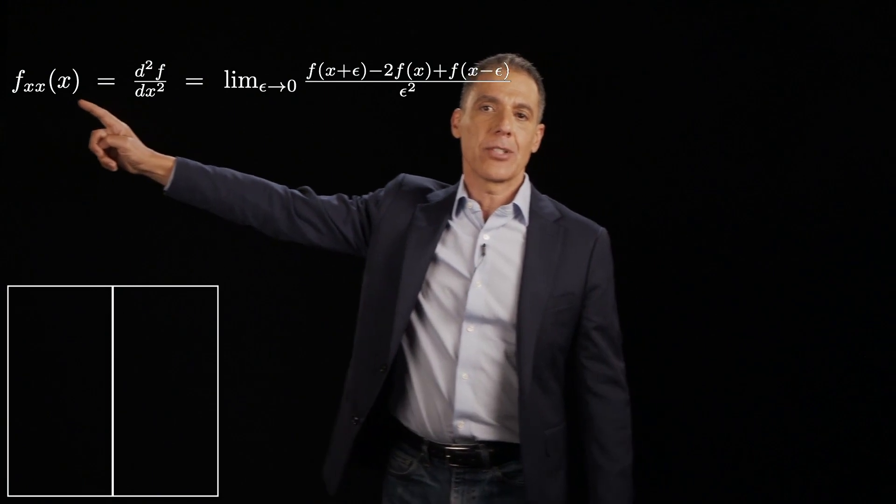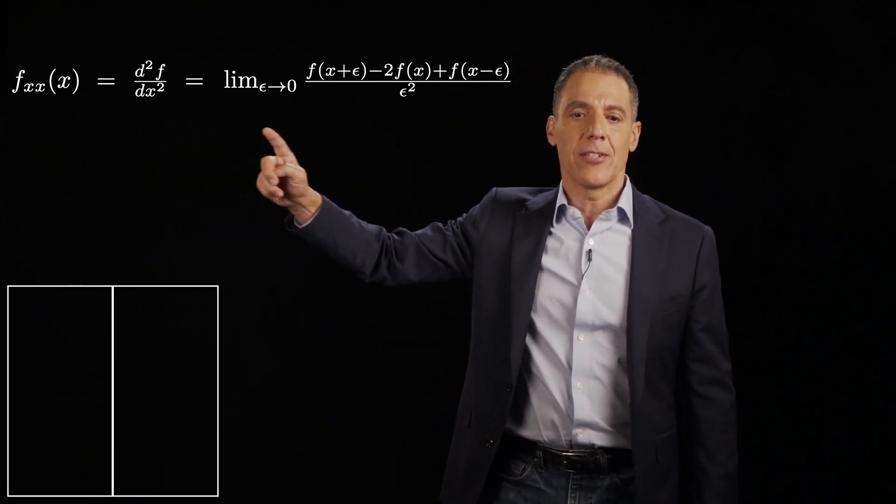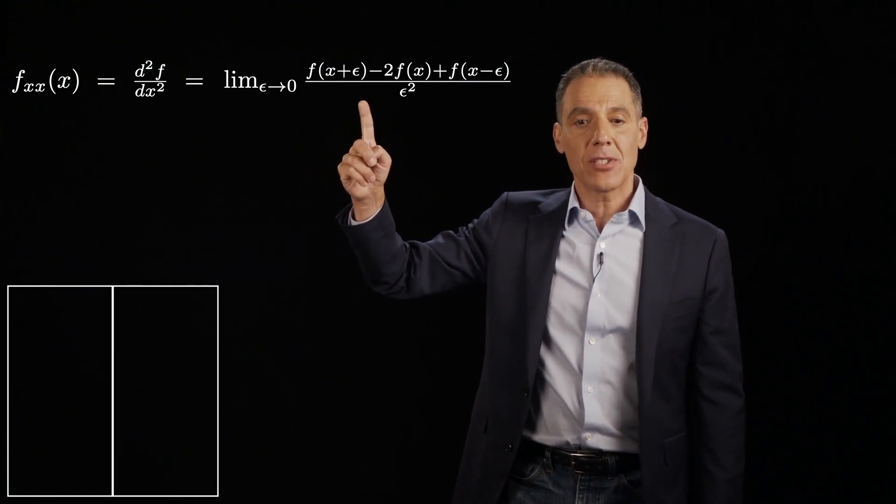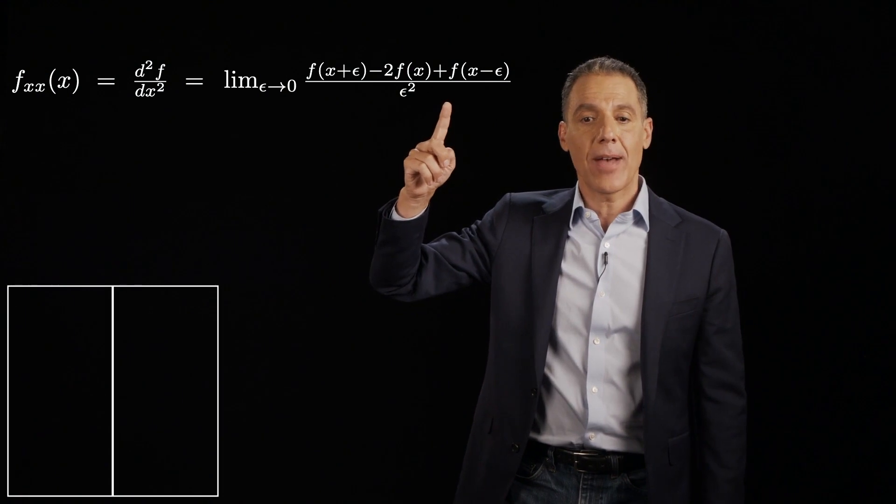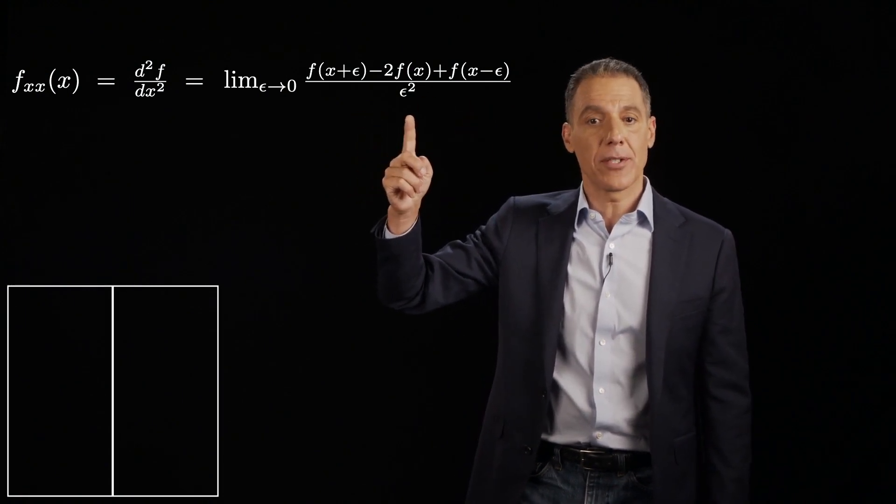The second derivative, which I'll denote with a double subscript x or d squared f dx squared, is equal to the limit as epsilon approaches zero of f(x+δ) - 2f(x) + f(x-δ) over epsilon squared.